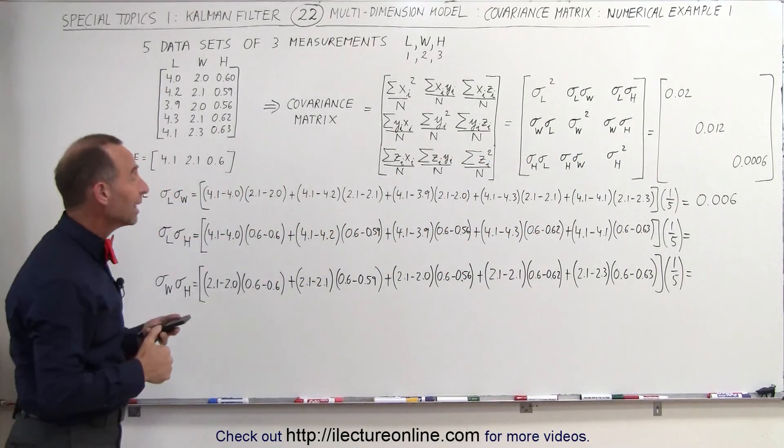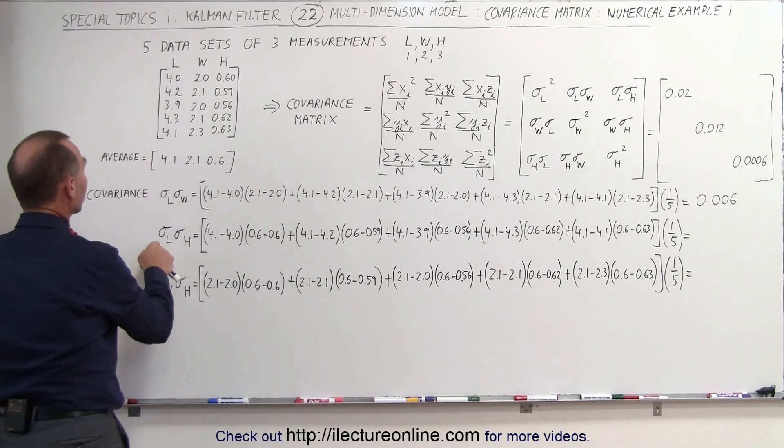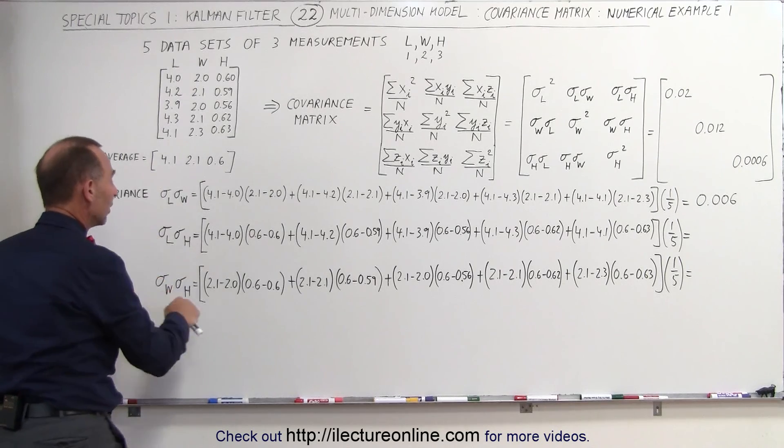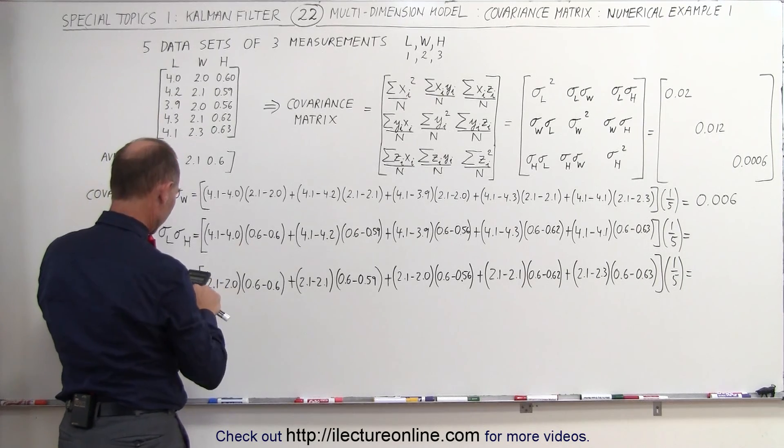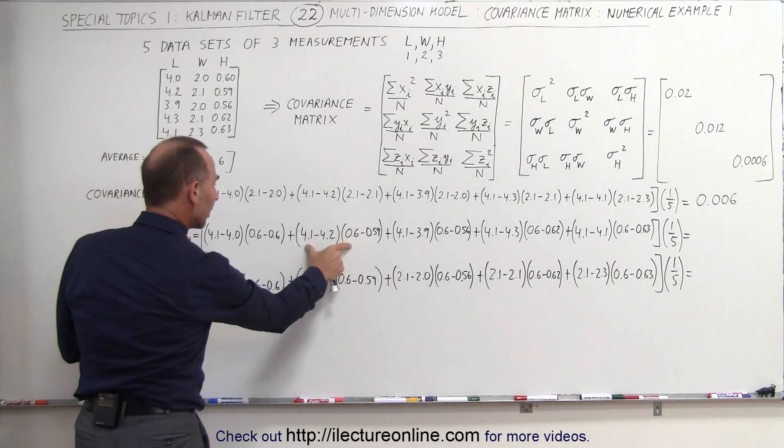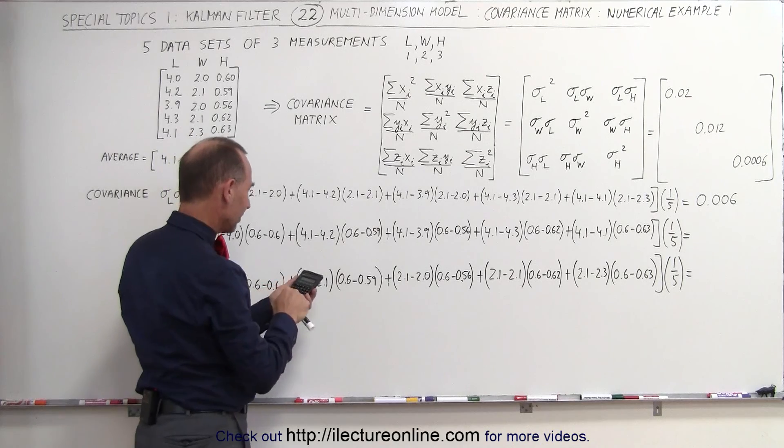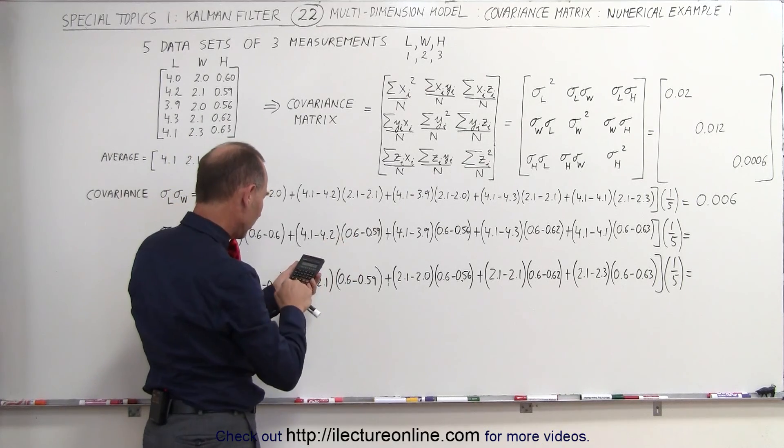All right, now we do it for the second covariance, the covariance between the length and the height. Here we get 0.1 times, well that would be 0, so I can go ahead and clear it out. Here that is not 0, we get 0.1 times 0.01.